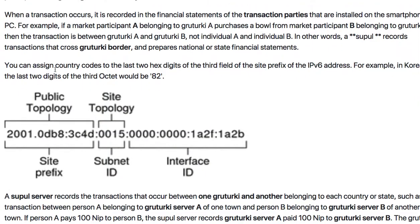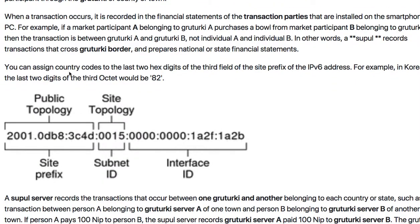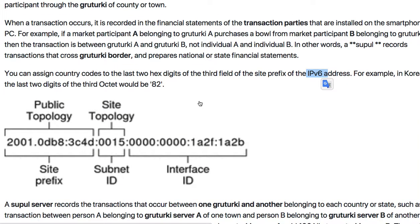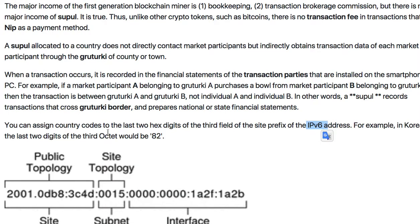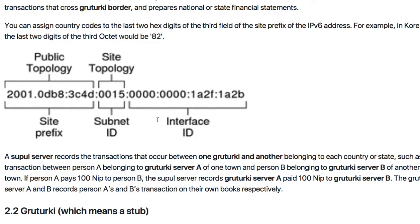Supul manages its server system and has an IP address — normally an IPv6 address — so you can connect to the Supul server anytime, anywhere. Their IPv6 address is determined by the GPS, latitude, or longitude of each nation, so you can easily estimate or calculate the address of a Supul server.